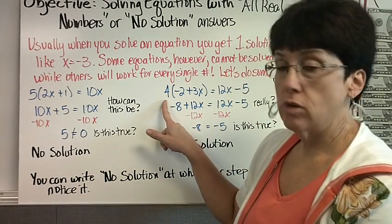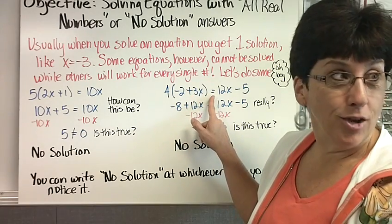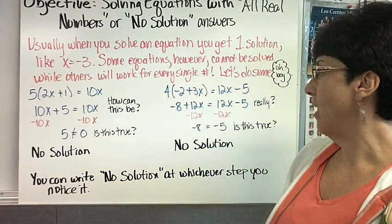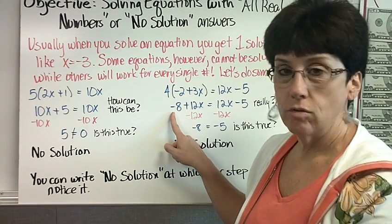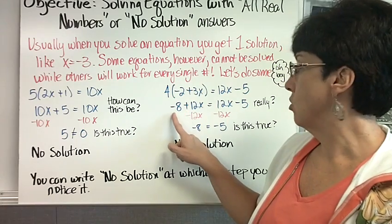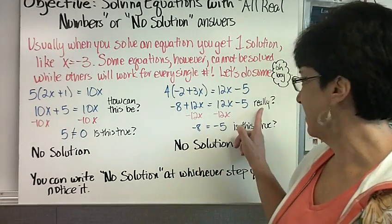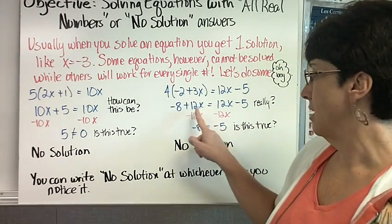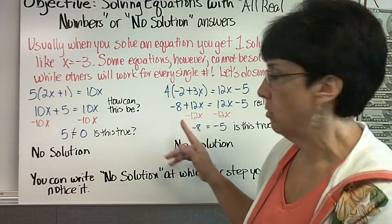Here's another one. 4 times the quantity of negative 2 plus 3x equals 12x minus 5. Let's do the distributive property. 4 times negative 2 is negative 8. 4 times 3x is 12x. So negative 8 plus 12x equals 12x minus 5. This doesn't seem to make sense, right? Because here we have 12x with different numbers. Well, let's find out.